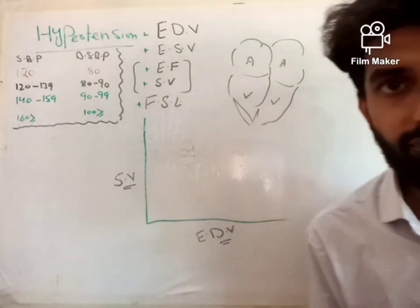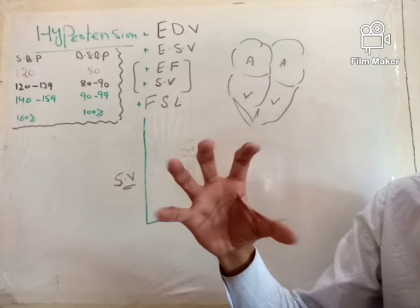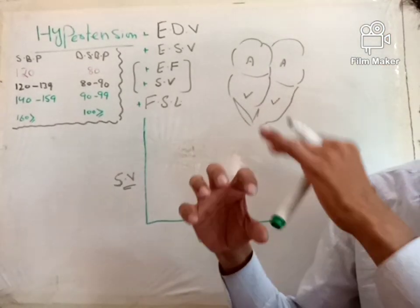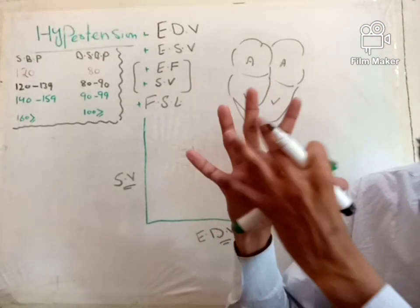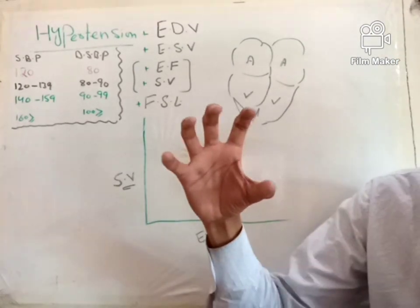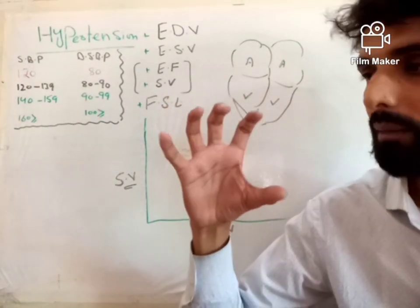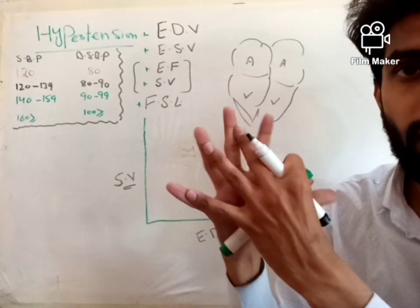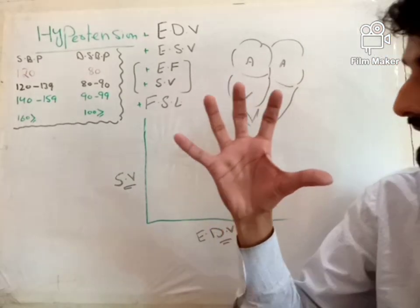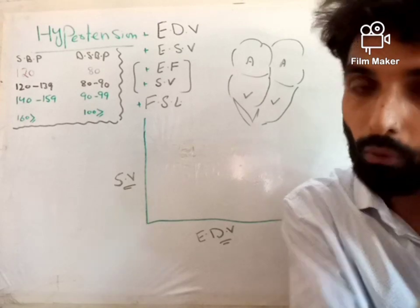He means to say that if end diastolic volume — for example, if the ventricle filling is more, like when more blood is coming at the end of diastole — more blood is present in the ventricle. If end diastolic volume is more, it means at the end of relaxation, more volume of blood is present in the heart. So obviously, the stroke volume will be more.